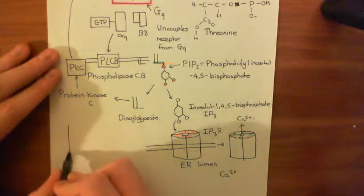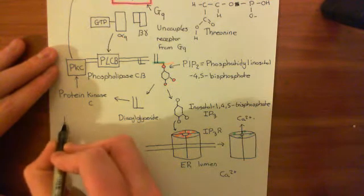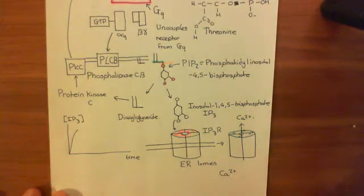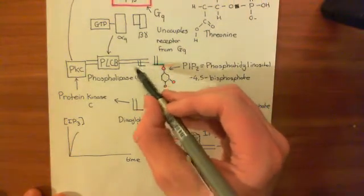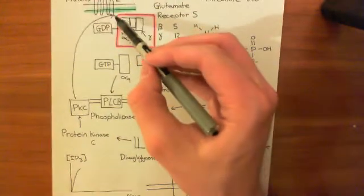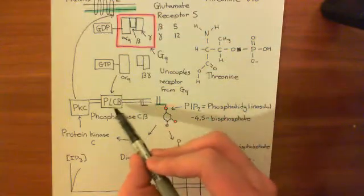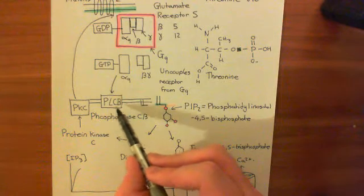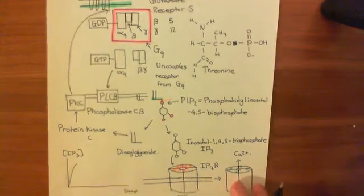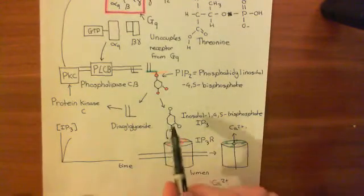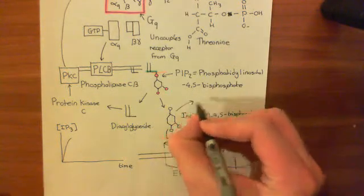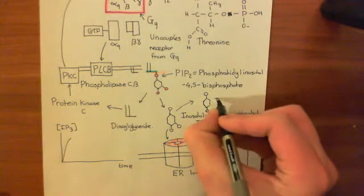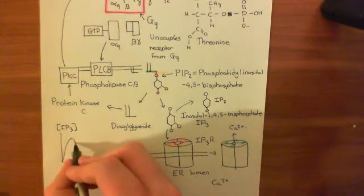If we plot concentration of IP3 against time: when we initially add glutamate, IP3 concentration goes up. Then diacylglycerol starts building up, activating protein kinase C, which inactivates the mGluR5 receptor. This stops activation of phospholipase C-beta, so you've stopped production of IP3. Phosphatases then break IP3 down into IP2. So you've got destruction of IP3 and no new IP3 being made — overall, IP3 levels go back down.